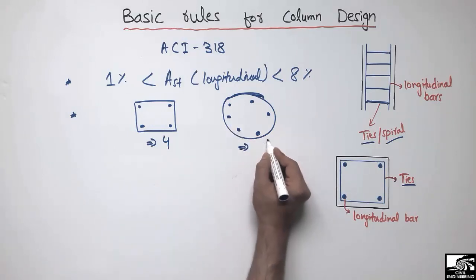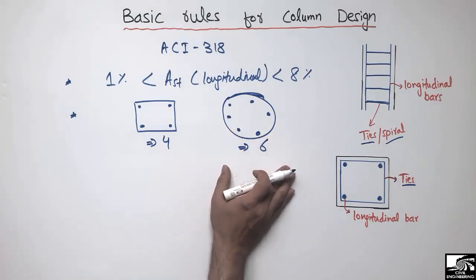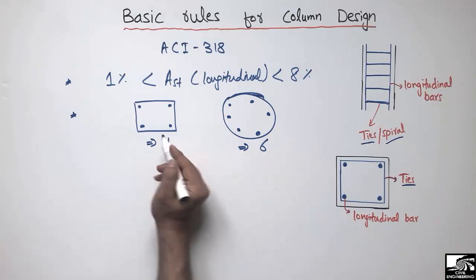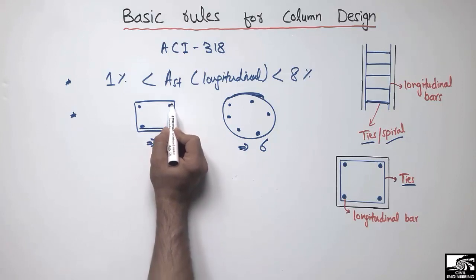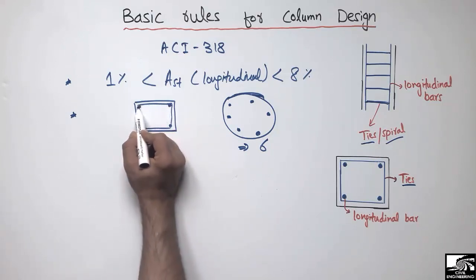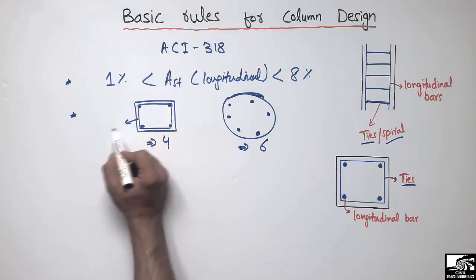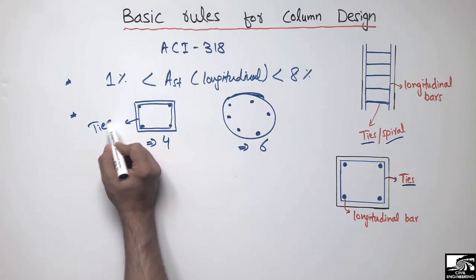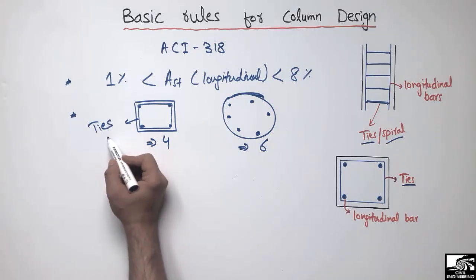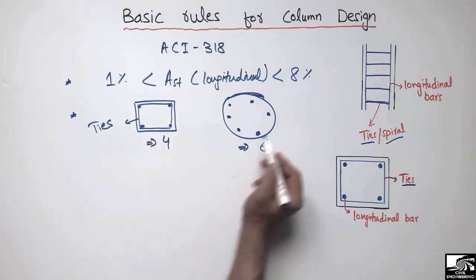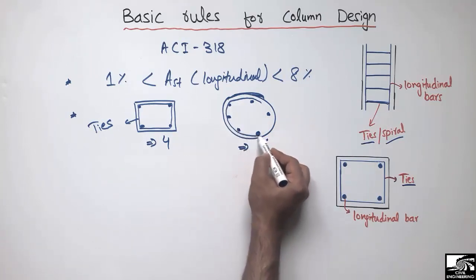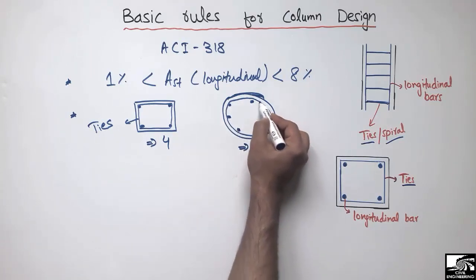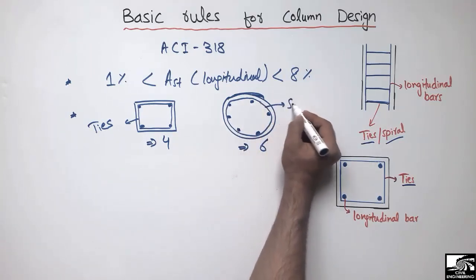This is the second rule for column design. In case of the rectangular or square column, the shear reinforcement is called a tie. In case of the circular column, the shear reinforcement is called a spiral.